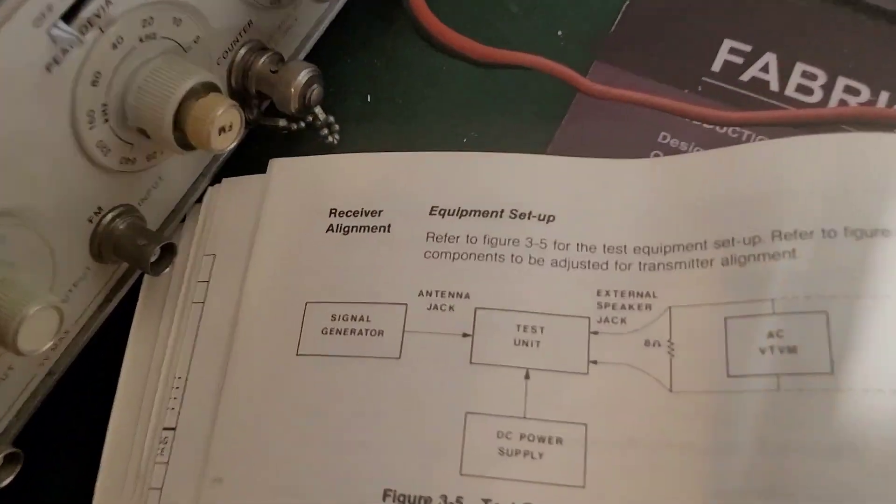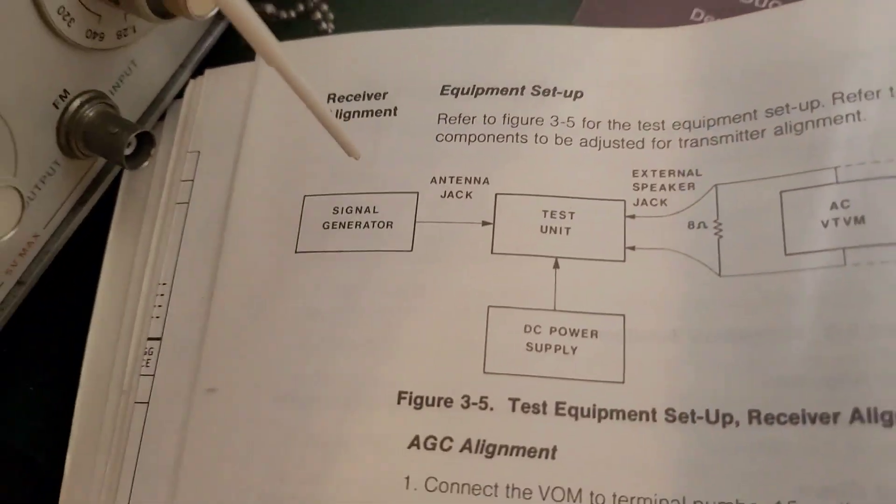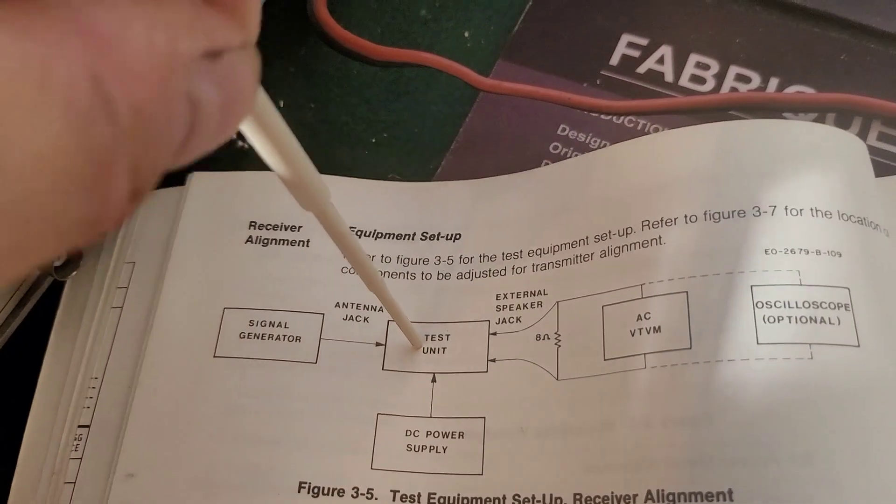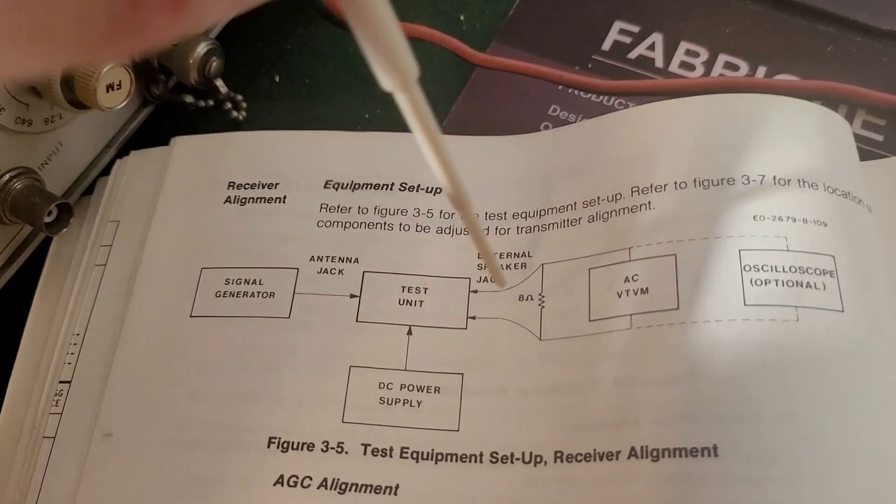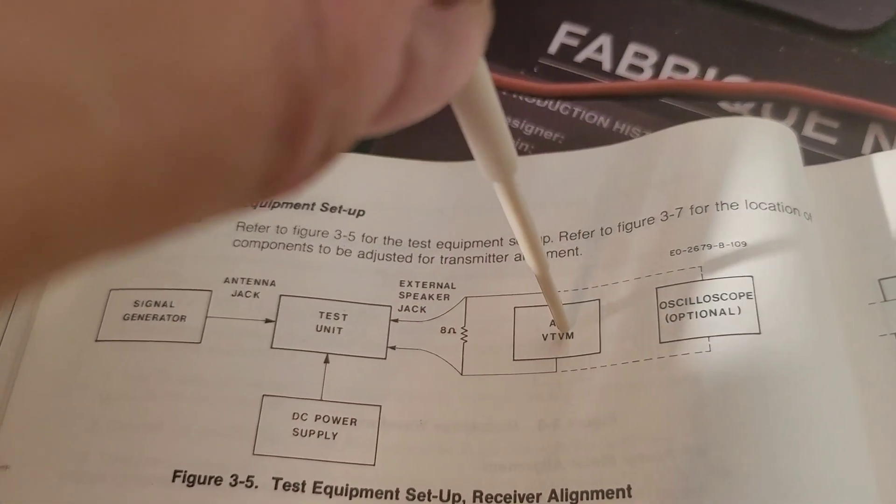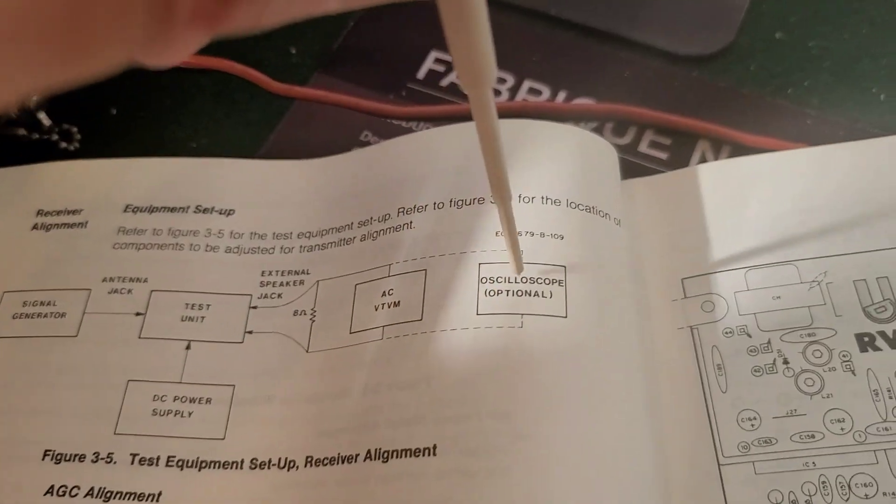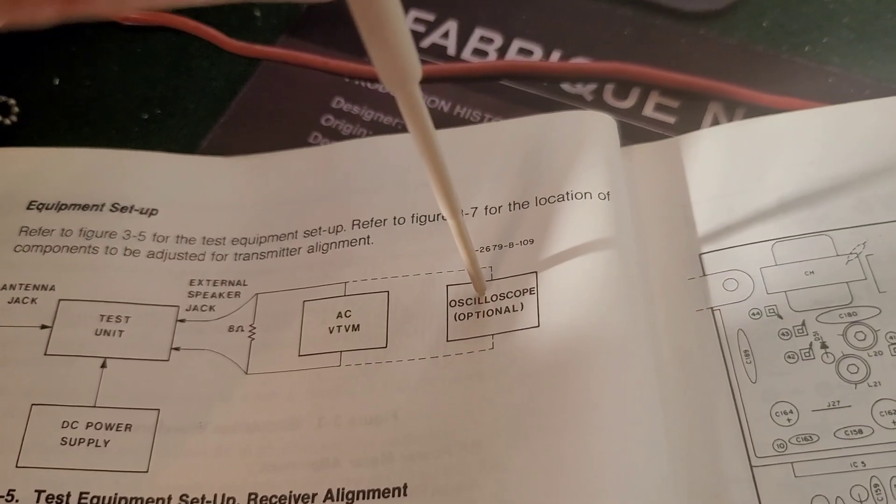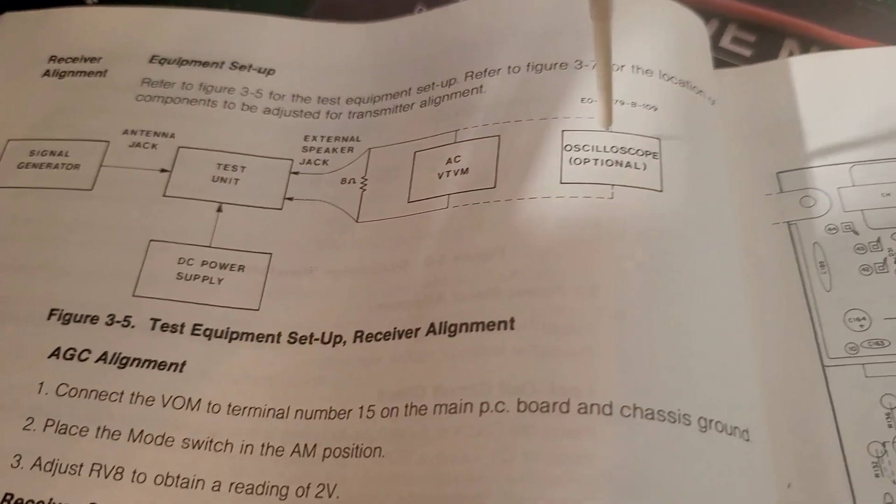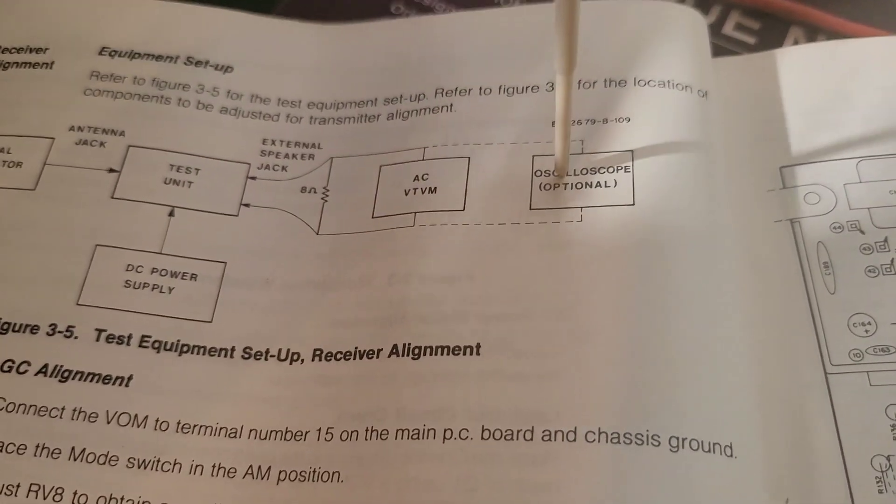When you go to a diagram here for the receiver alignment, you see a signal generator, the radio, power supply, the 8 ohm speaker, the vacuum tube voltmeter, and then what's even optional—which is crazy—is an oscilloscope.